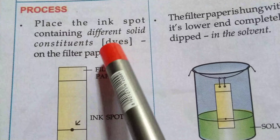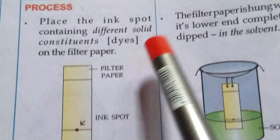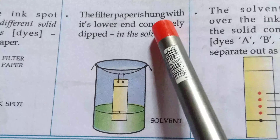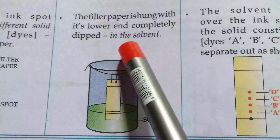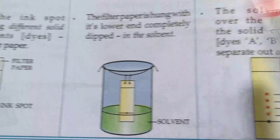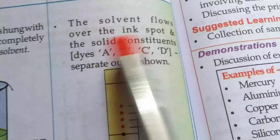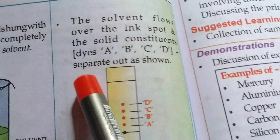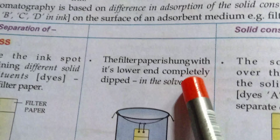Place the ink spot containing different solid constituents on a filter paper. The filter paper is hung with its lower end completely dipped in the solvent. The solvent flows over the ink spot and the solid constituents separate out as shown. This process is quite simple.